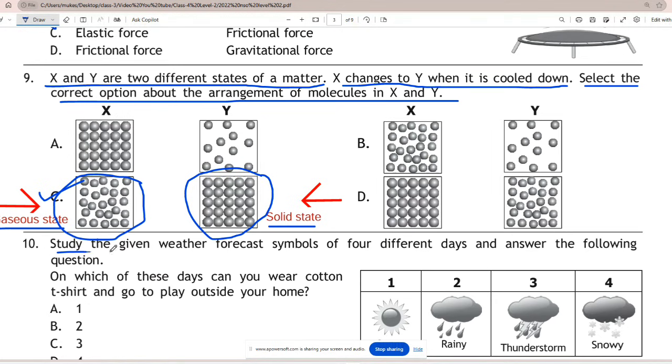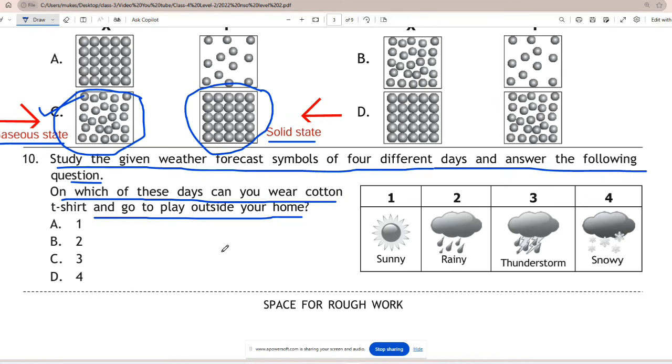Question 10: Study the given weather forecast symbols of four different days and answer the following question. On which of these days can you wear cotton t-shirt and go to play outside your home? Correct answer is option A - sunny day. We wear cotton clothes in summer season.